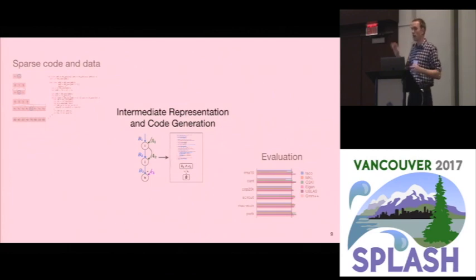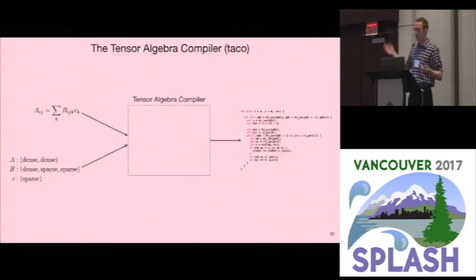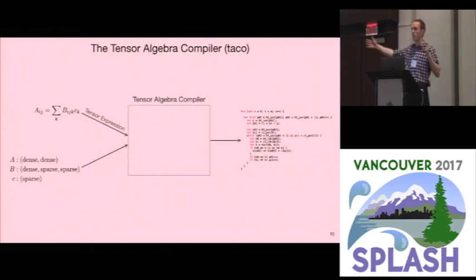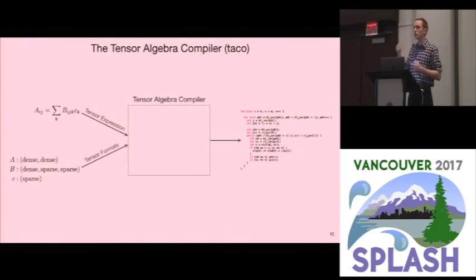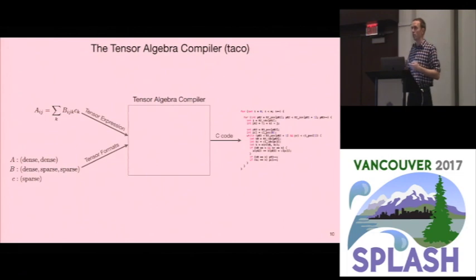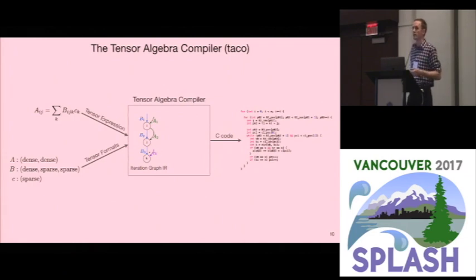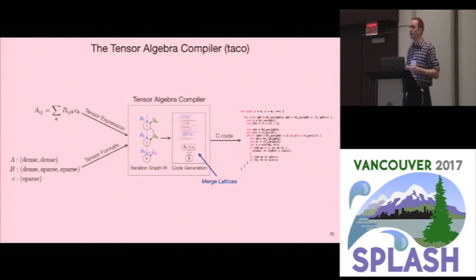In the next section, I'll describe how a compiler automates generating sparse and dense tensor algebra code. This is the tensor algebra compiler, TACO. The compiler takes two things as input: a tensor expression of arbitrary size with any number of operands and operators, and for each operand a format describing whether that operand is dense or sparse in each dimension. It then outputs C code that computes the expression on those formats. Inside, the compiler turns the expression into an iteration graph — a new intermediate representation — which is then used to generate code using another concept called a merge lattice.